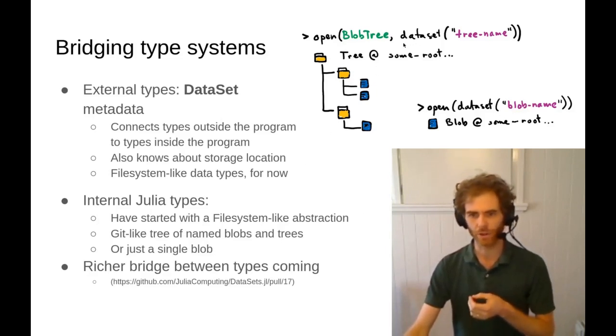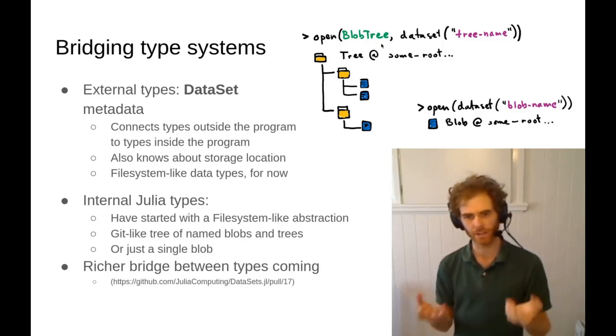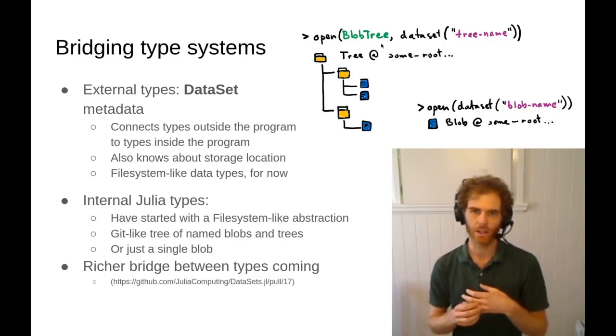So for instance, if you want to open some data with Datasets.jl, you can use the Dataset function to get the metadata out for a particular named dataset. And then you can map that into your program as a particular Julia type. So here we've got, we're mapping it in as a blob tree, which is basically a Git-like tree of blob data.